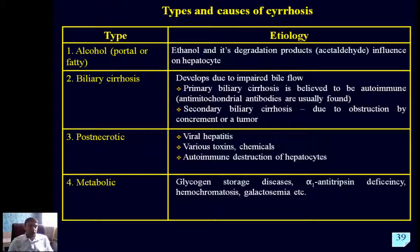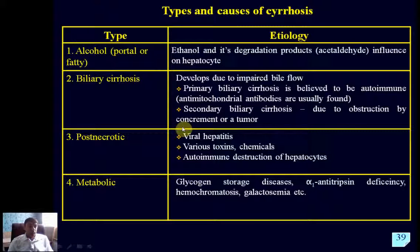Biliary cirrhosis is due to impaired bile flow and has two types: primary biliary cirrhosis, which is autoimmune, and secondary biliary cirrhosis, which develops in case of obstruction in the biliary pathways. Another very common type of cirrhosis is due to viral hepatitis, especially hepatitis B and C viruses, which commonly may lead to cirrhosis — hepatitis A is very uncommon in this respect. Other toxins, chemicals, as well as autoimmune destruction form the group of so-called post-necrotic cirrhosis.